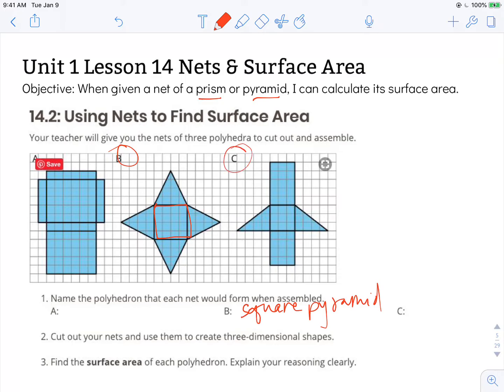Alright, for C, we have two bases that are the same. They're congruent. They're the exact same shape and size. It's these triangles. And then all the other faces are rectangles. So this is a triangular prism.